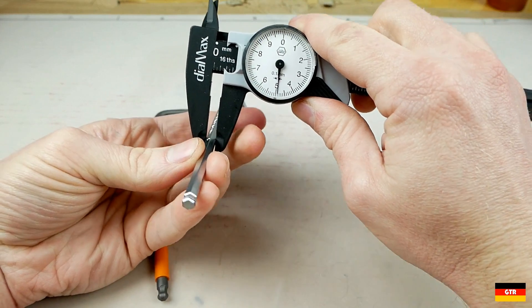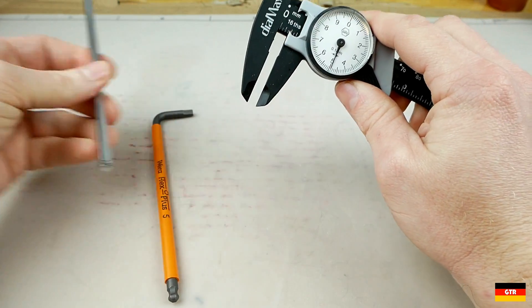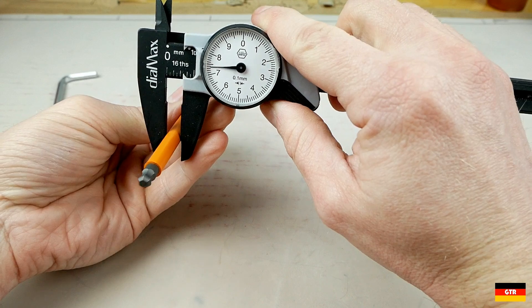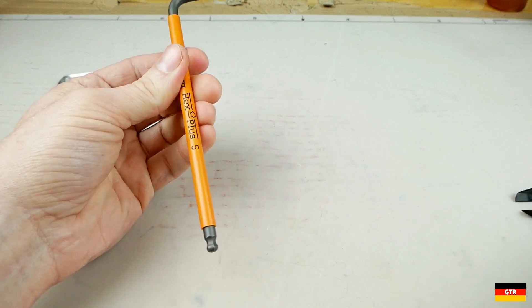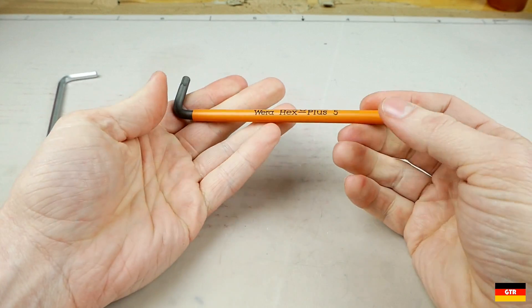I mean the Wiha is pretty much exactly on 5, just a little bit under 5. And this guy is right around 7.5mm. So yeah, just about 2.5mm wider in diameter.